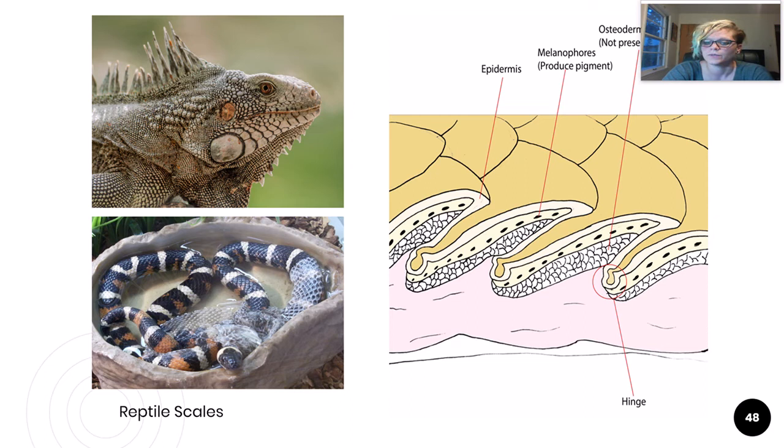Hundreds of millions of years ago, the common ancestor for reptiles, mammals, and birds had scale-like body structures. Recently, scientists have discovered that mammalian hair, reptile scales, and bird feathers are all modifications of this original scale. Interesting stuff.